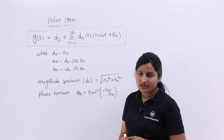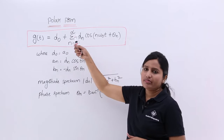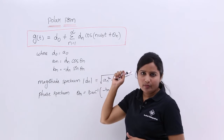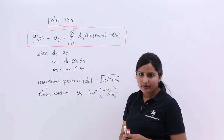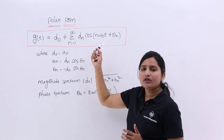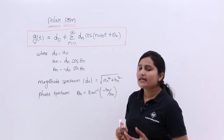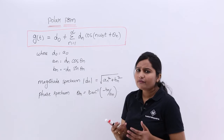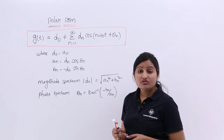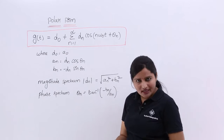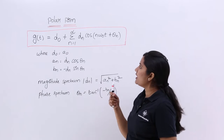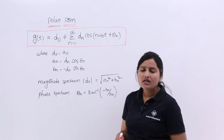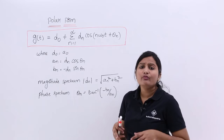If you observe the trigonometric Fourier series representation, it is a₀ plus summation n equals 1 to infinity of aₙ cos(nω₀t) plus bₙ sin(nω₀t). That is the equation of the trigonometric Fourier series. Comparing, here we consider only cosine — cos(nω₀t + θₙ). You can also consider sin(nω₀t − θₙ), but if you consider sine there, then you need to draw a separate spectrum and there is some added complexity.